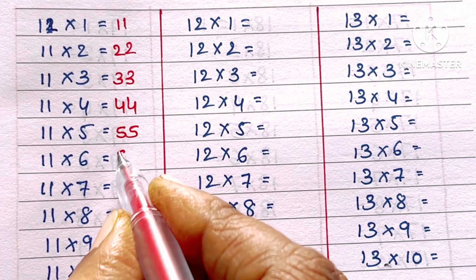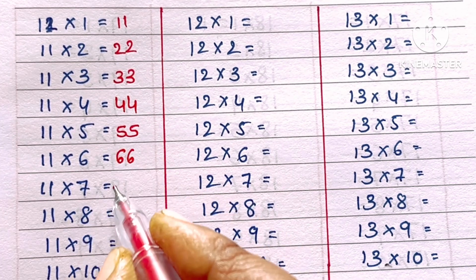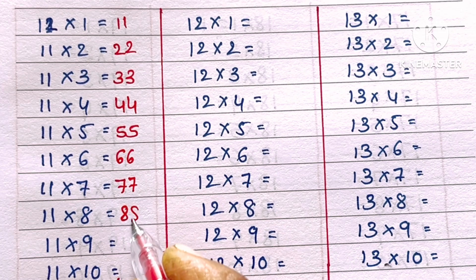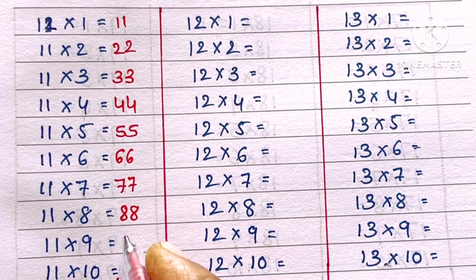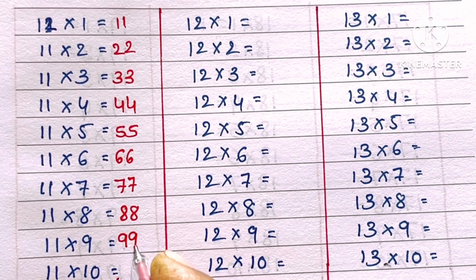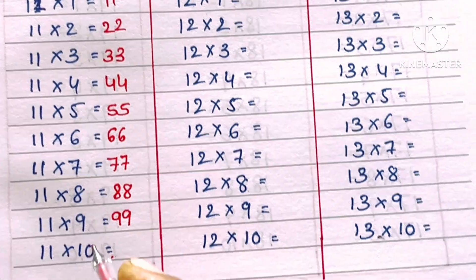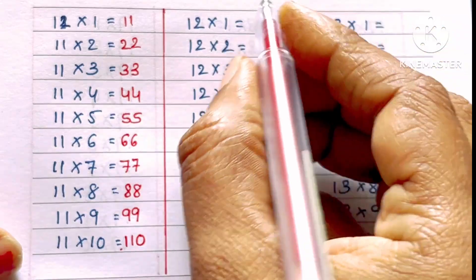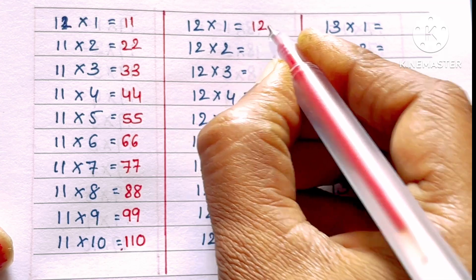11 sixes are 66, 11 sevens are 77, 11 eights are 88, 11 nines are 99, 11 tens are 110.